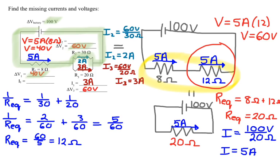If we were to do it for a different loop, like for instance this loop, we'd see that we'd get the same thing. 100 minus 40 minus 60 still equals 0.